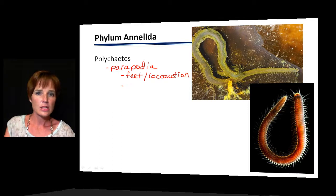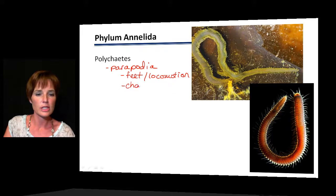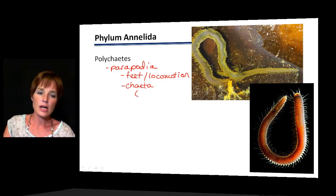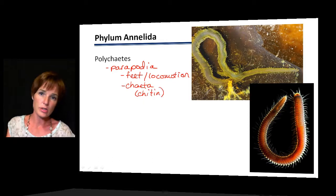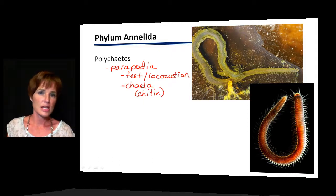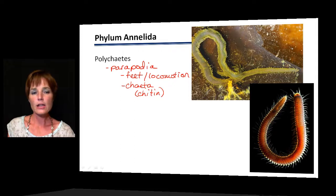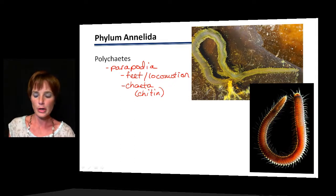On the parapodia themselves, there are structures called chaetae. These are little bristles made of chitin, and they function as gills. There are quite a lot of them in polychaetes, which is really where the name comes from. Most polychaete species are marine.